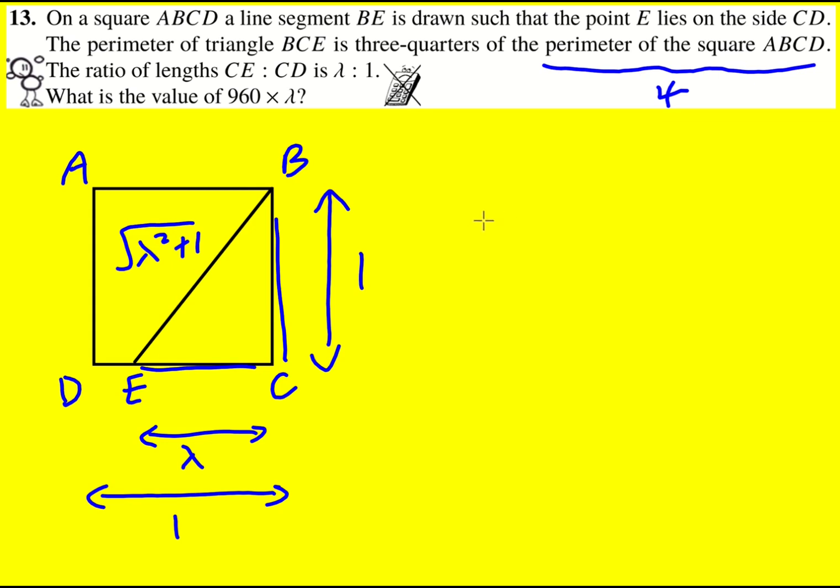And that's going to give me as my perimeter of the triangle lambda squared plus one plus lambda plus one. And that is three quarters of the perimeter of the square so it's going to be three over four times four. And I've created an equation so I'm now trying to work out what lambda is.